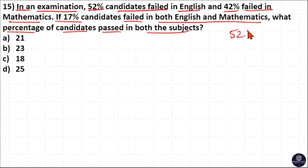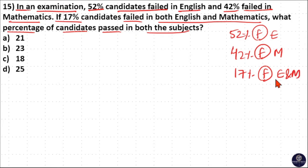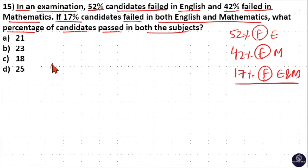52% failed in English, 42% failed in Maths, and 17% failed in both English and Maths. The combined data is for failed students and we already have the failed student data. Let us draw a Venn diagram here.